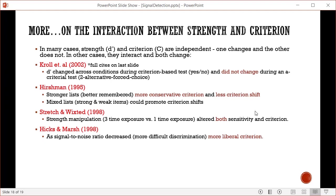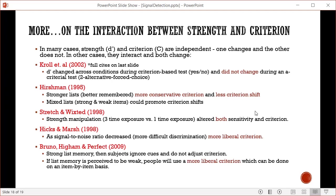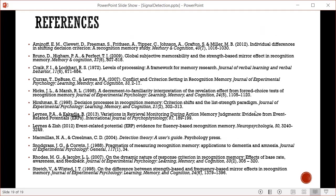This maps onto Hirschman's findings. Bruno, Higham, and Perfect summarized this relationship quite clearly and elegantly. If you have strong memory for a list, subjects ignore cues and don't adjust their criterion, giving less shift and a conservative criterion. But if the list is perceived to be weak, people use a more liberal criterion, which can be done on an item-by-item basis. Here are the references for all the papers I discussed. This is meant to be an initial overview to orient you to the key ideas. I hope you found it helpful.